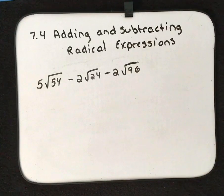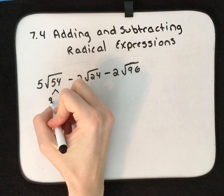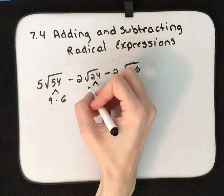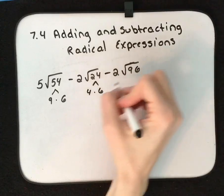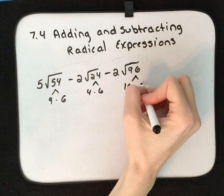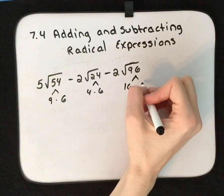Let's see if we can clean this all up. Our goal is to find perfect squares that are factors of each number. So 54, that is 9 × 6. 24, that is 4 × 6. 96, that is 16 × 6.